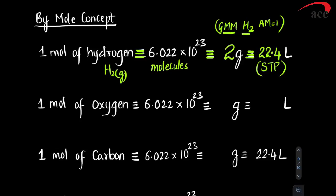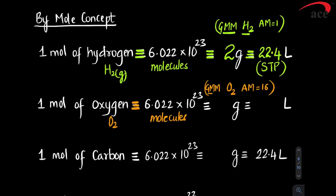For hydrogen: one mole = 6.022×10²³ molecules. H₂ has atomic mass 1, two atoms per molecule, so molar mass = 2 g. Hydrogen is a gas, so it occupies 22.4 L at STP. For oxygen: one mole = 6.022×10²³ molecules. O₂ has atomic mass 16, so molecular mass = 32 g. Oxygen is a gas, so it also occupies 22.4 L at STP.